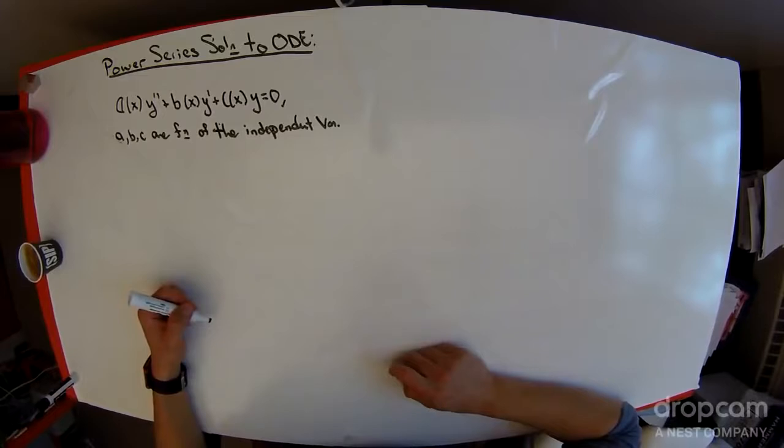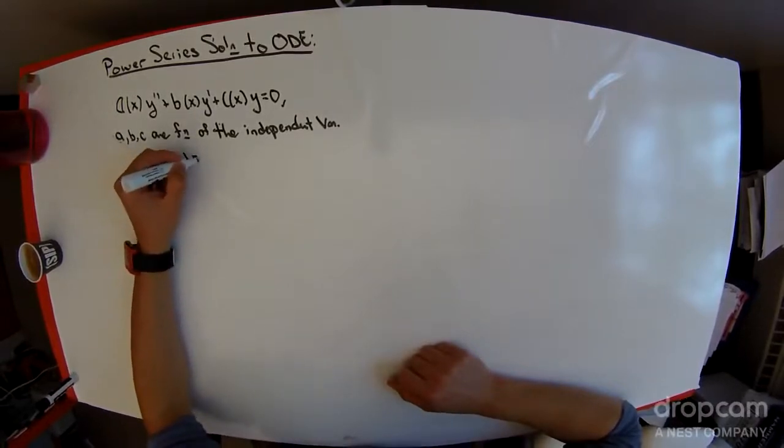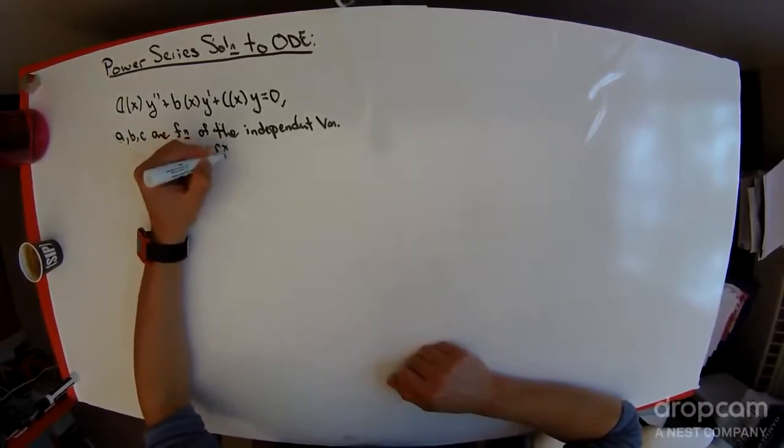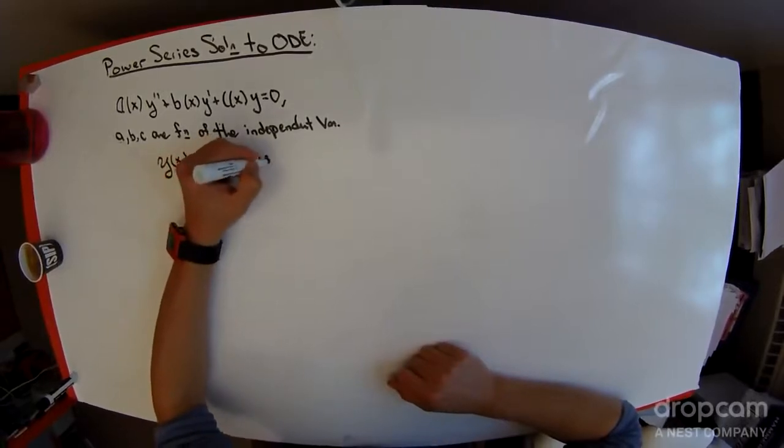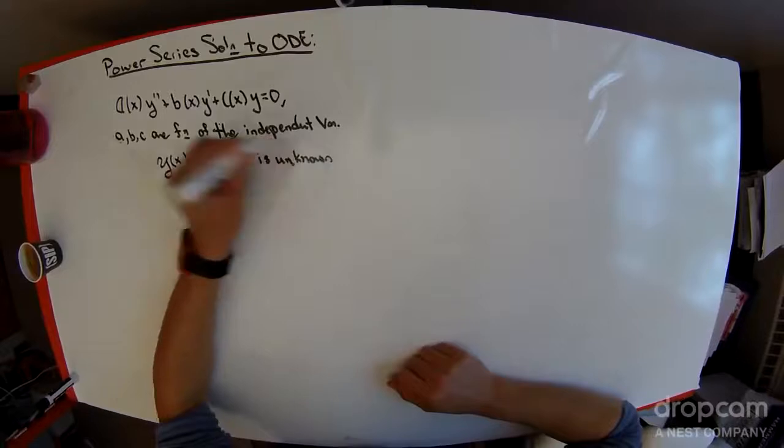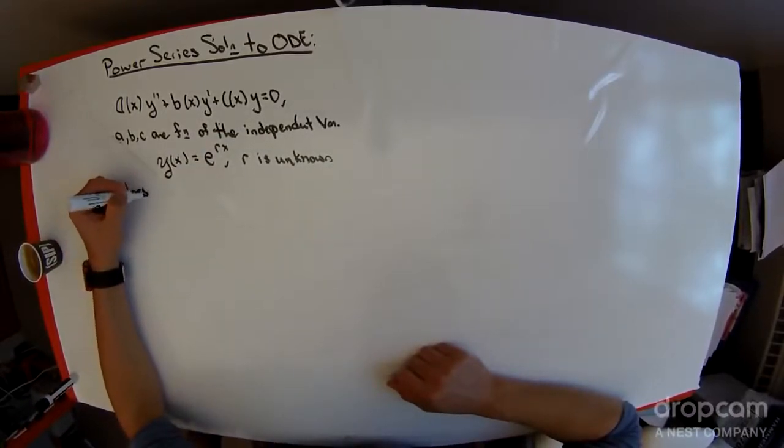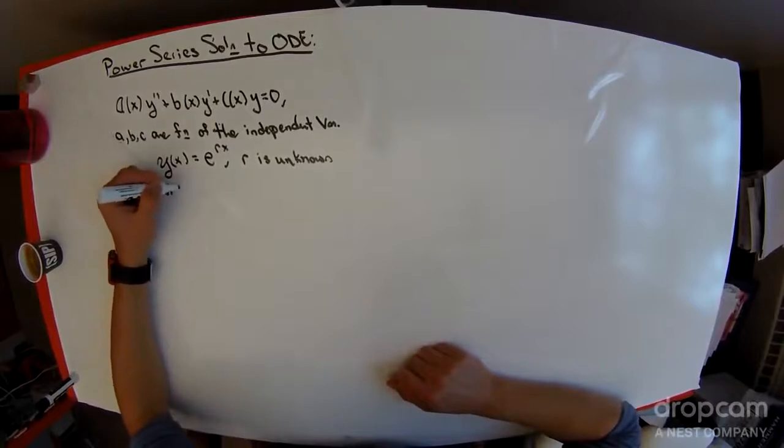If they weren't functions of the independent variable and were in fact constants, then the guess of y of x equal e to the rx, where r is unknown, would work. In this case, this does not work anymore.